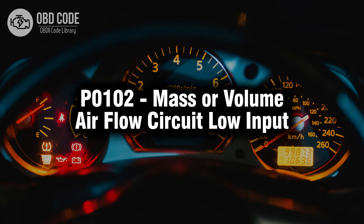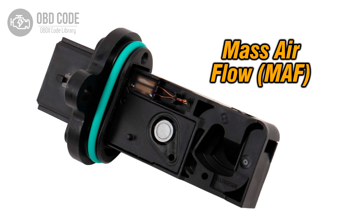Welcome. In this video we will talk about code P0102, its symptoms, causes and possible solutions. The P0102 trouble code indicates a low input issue within the mass or volume air flow circuit. This code typically points to problems with the sensor responsible for measuring the air entering the engine, affecting the fuel air mixture and engine performance.